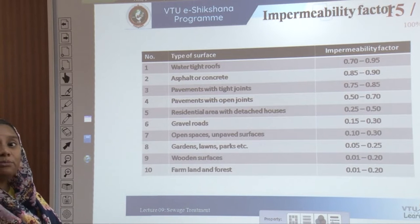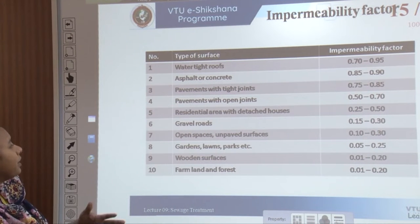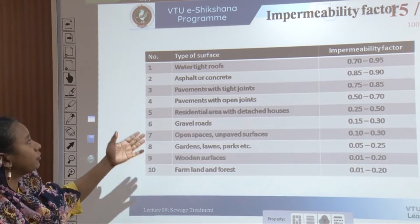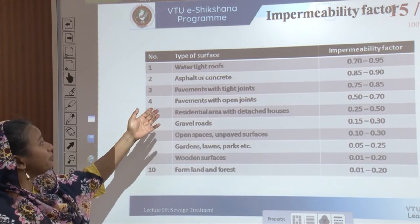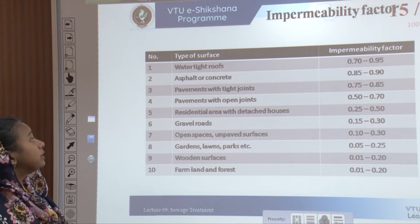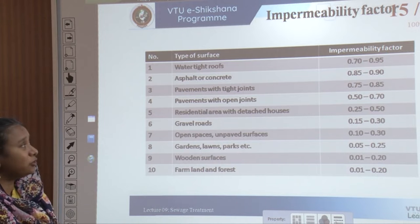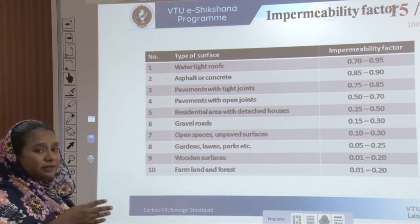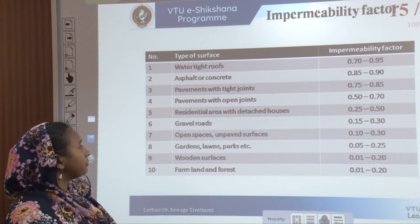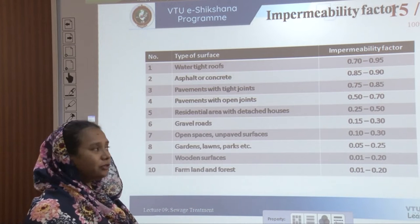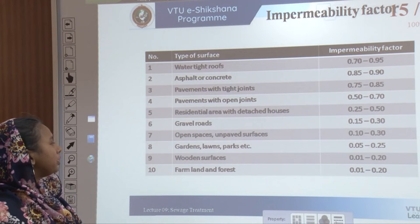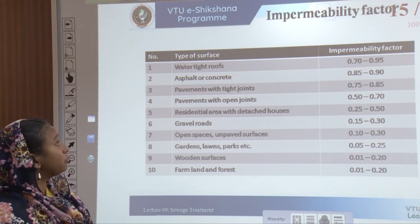The impermeability factor accounts for water absorption due to surface runoff. Watertight roofs have an impermeability of about 0.95. Concrete roads and pavements with tight or open joints have a similar average. Residential areas with detached houses have 0.25 to 0.50, open spaces have 0.10 to 0.30, gardens, lawns, and parks have 0.05 to 0.25, and farmland and forest have 0.01 to 0.20.